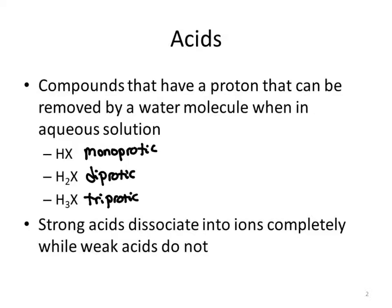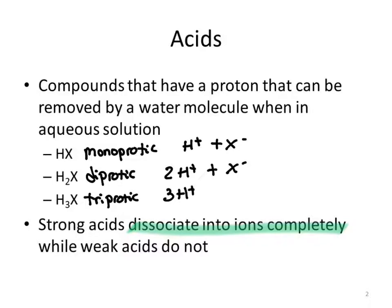Strong acids are going to dissociate into ions completely. When we get dissociation from a monoprotic acid, we get H+ plus whatever the anion is. For diprotic, we get two H+ plus the anion. And for triprotic, we get three H+ plus the anion.